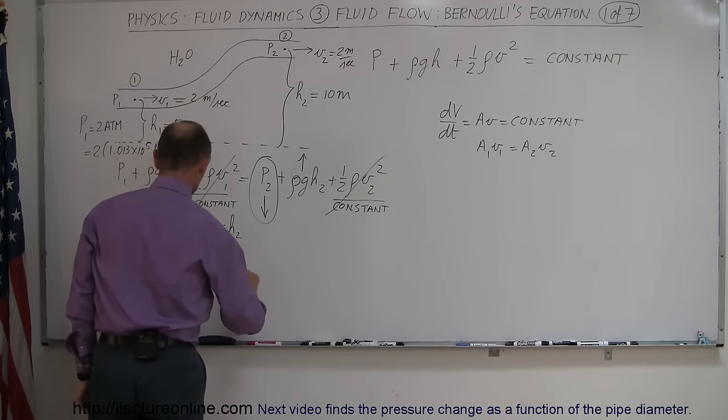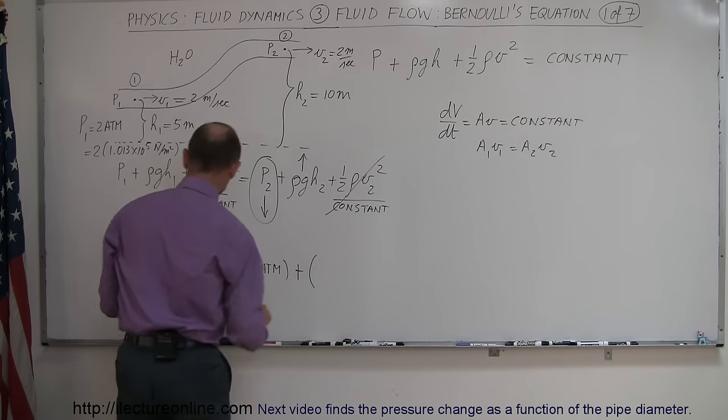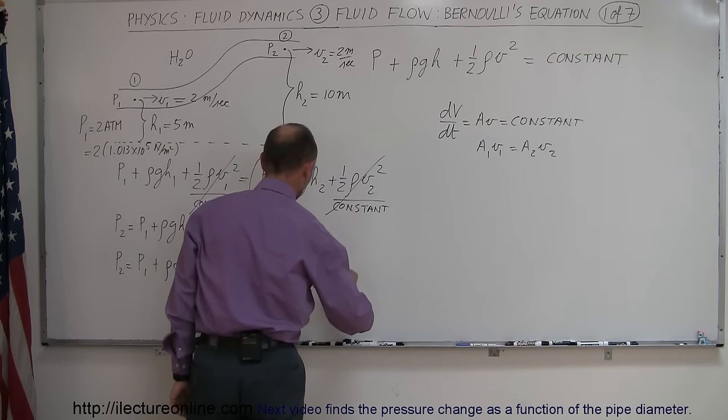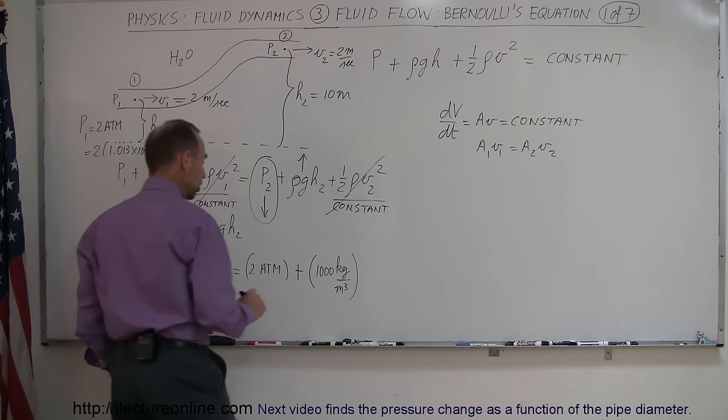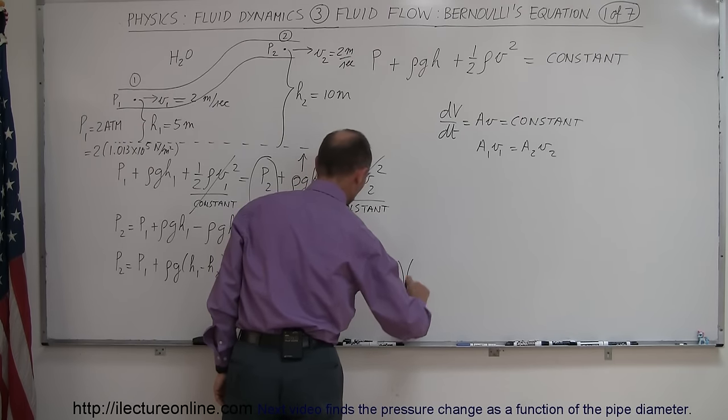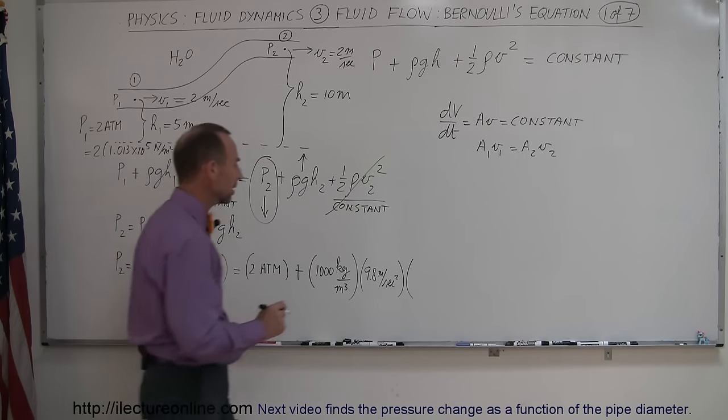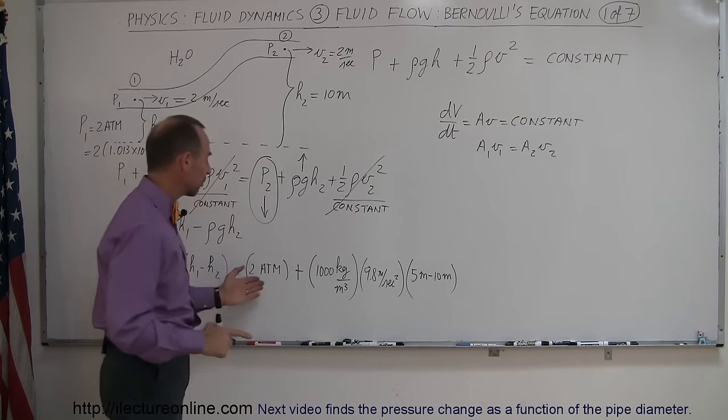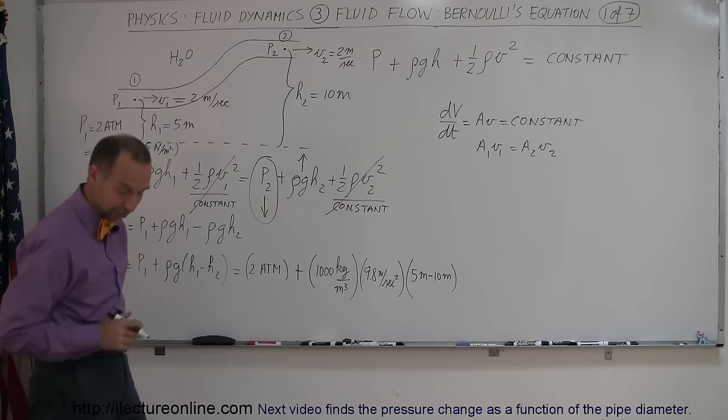All right, so let's plug these numbers in. So this is equal to, I'll leave this at two atmospheres for now, plus the density of water, and of course, the density of water is 1,000 kilograms per cubic meter, so 1,000 kilograms per cubic meter. G is 9.8 meters per second squared. And then we multiply that times H1 minus H2. Now, H1 is 5 meters, H2 is 10 meters. And so very quickly, you can see that that would be a negative number, which means that the pressure will be less at 0.2 compared to 0.1. Now, how much less? All right, let's find out.